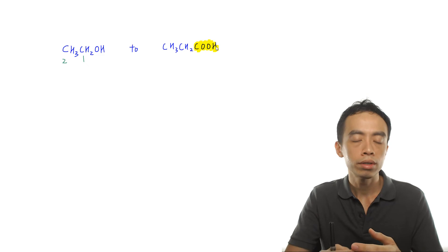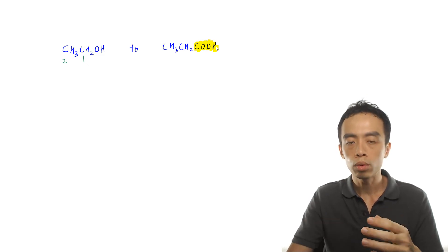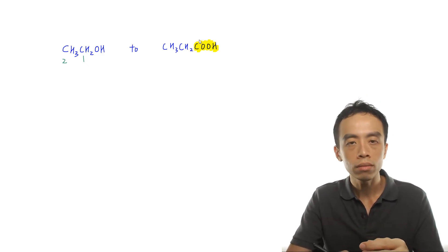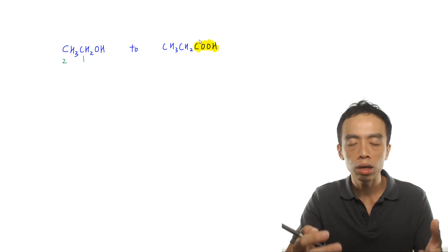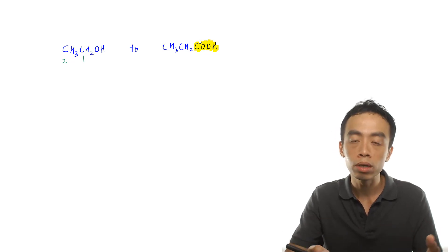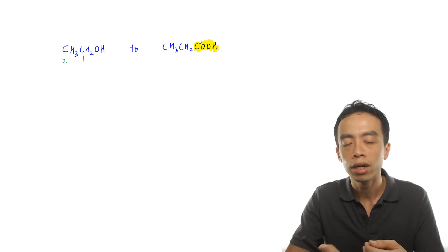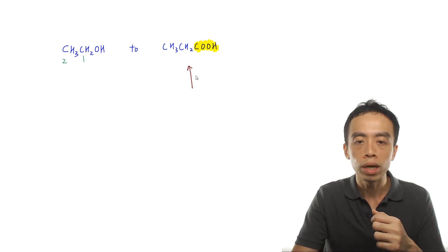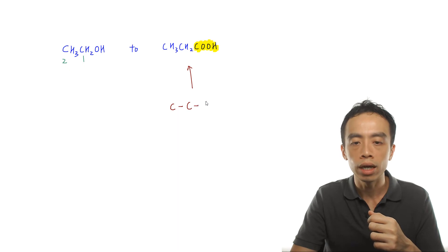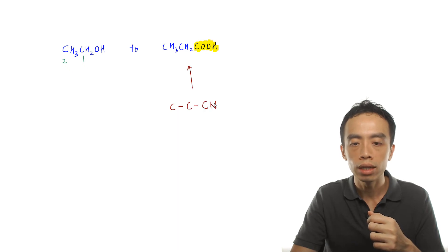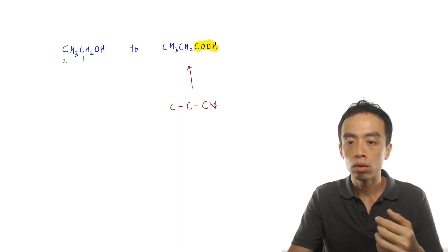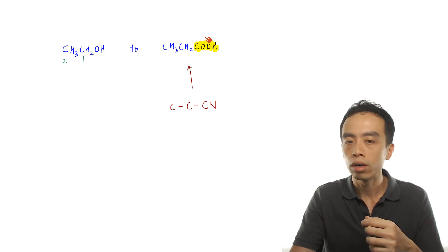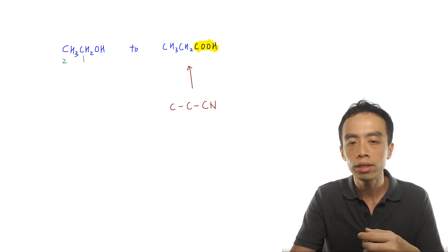For step-up processes, it is a lot easier for us to work backwards — I focus on the product and I work backwards. In organic chemistry, there's a proper term for this: we call this retrosynthesis. So I know that one step back, this compound actually has a carbon-carbon-nitrile. And this reaction involving nitrile to carboxylic acid is just a hydrolysis. So maybe I'll write down the type of reaction — plus water — which is a hydrolysis reaction.